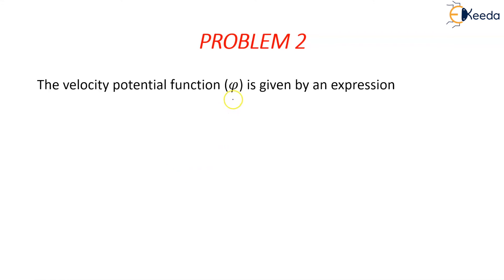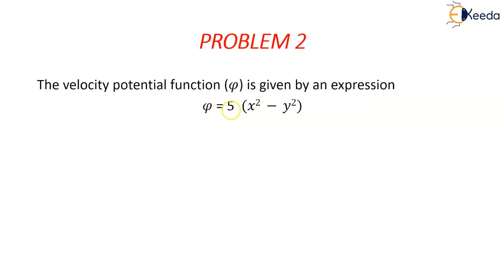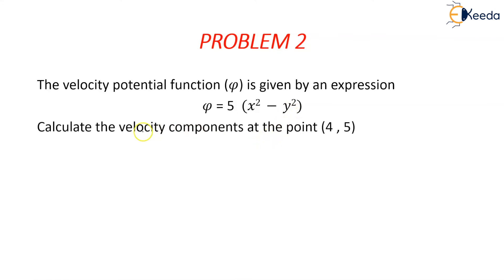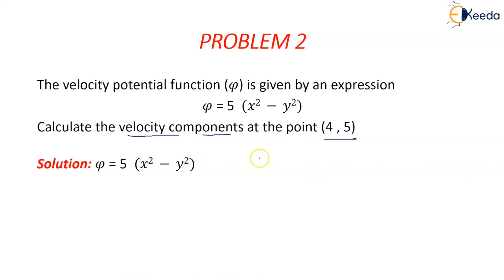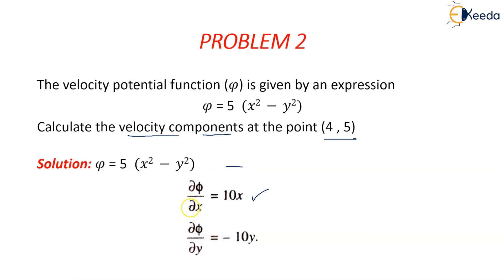Moving on to Problem 2: the velocity potential function is given by φ = 5x² - y². We need to calculate the velocity components at the point (4, 5). Partially differentiating with respect to x and y: ∂φ/∂x = 10x and ∂φ/∂y = -10y.